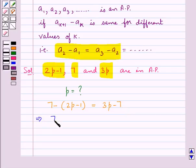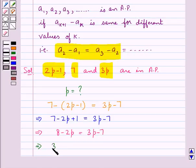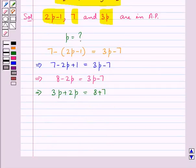Further, 7 minus 2P plus 1 is equal to 3P minus 7. That is, 3P plus 2P plus 2P is equal to 8 plus 7. Further, we get 5P is equal to 15.